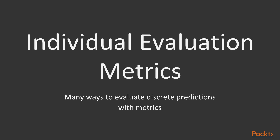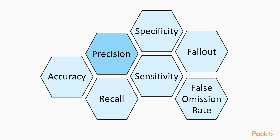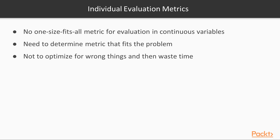There are a huge number of ways to evaluate discrete predictions with metrics, including accuracy, precision, recall, specificity, sensitivity, fallout, false emission rate, and many more. As with continuous variables, there is no one-size-fits-all metric for evaluation. Each time you approach a problem, you need to determine the metric that fits the problem and matches the goals of the project. You don't want to optimize for the wrong things and then waste time re-implementing your model based on other metrics.